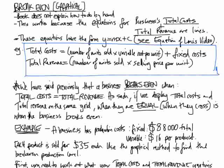This works because the equations for business — total costs and total revenue — are actually in the form of a line. They can be displayed as a line. They have the form y equals mx plus c. If you're not sure about what we mean by y equals mx plus c, make sure you check out the Equation of Lines video again. It explains it in simple terms there.